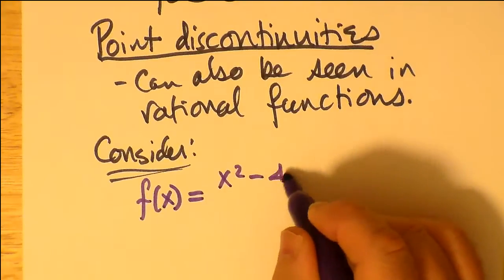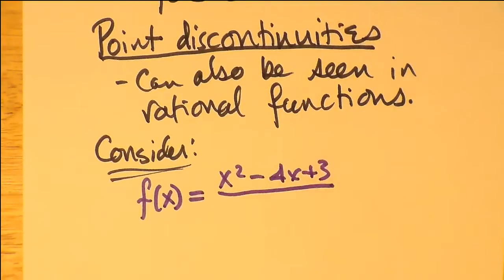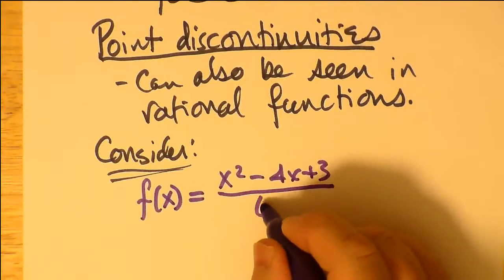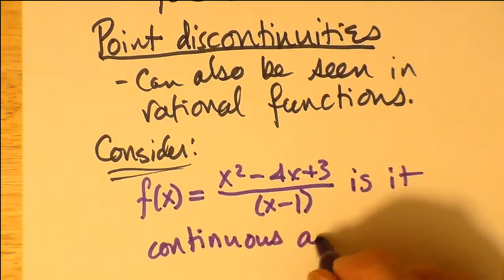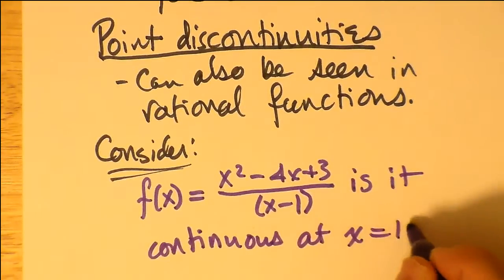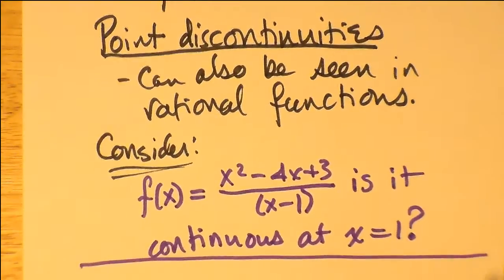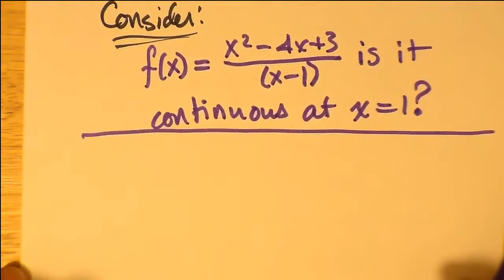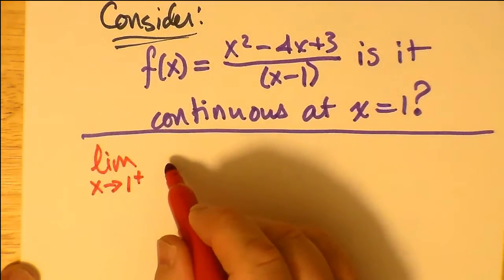So consider, for example, the same polynomial, except we're going to now divide it by x minus 1. So we're going to just change it a little bit. Is this continuous at x equals 1? And if not, what kind of discontinuity is it?